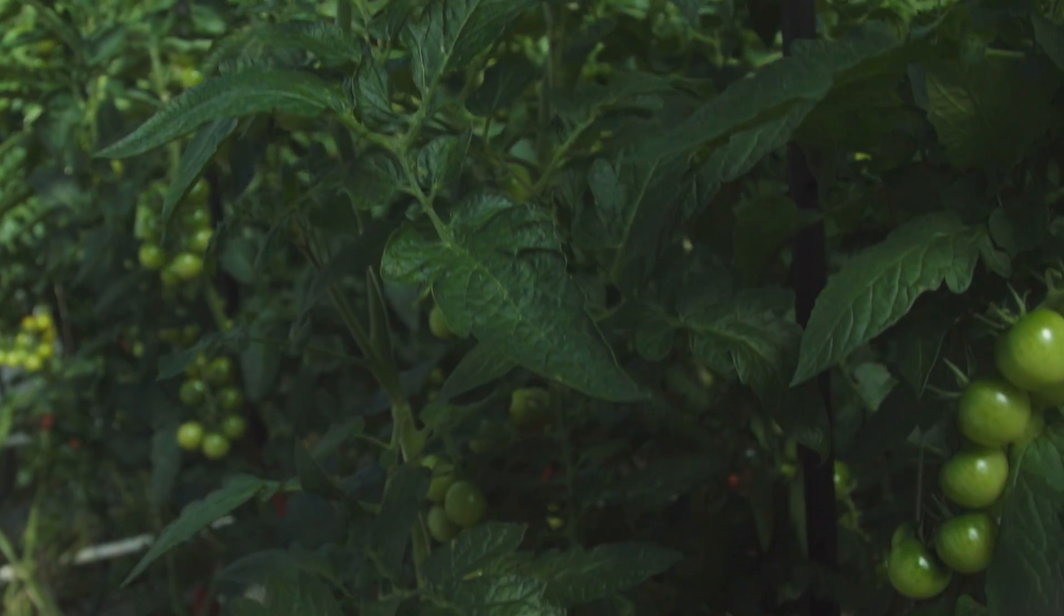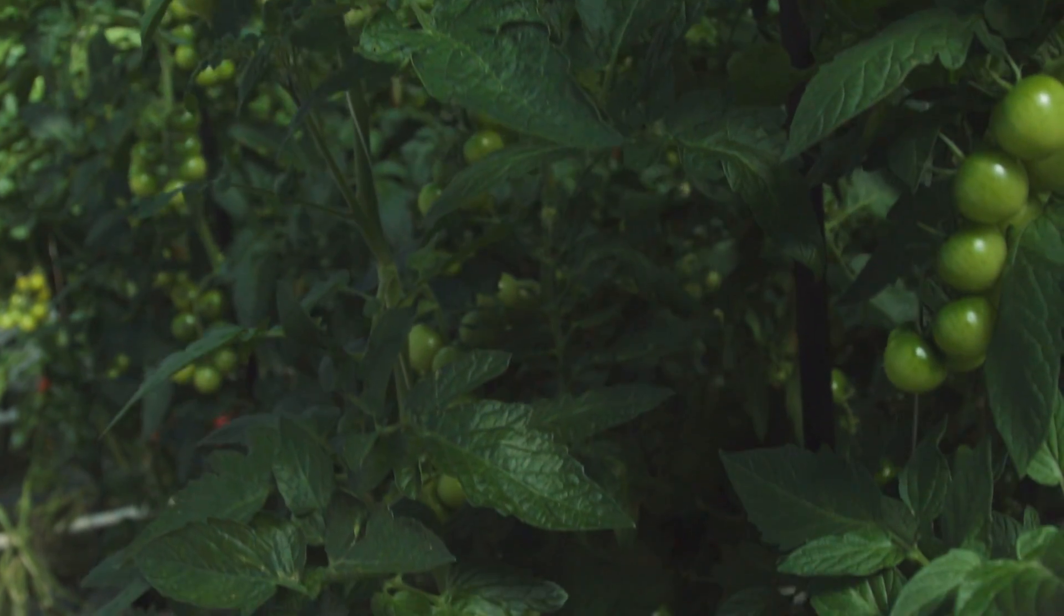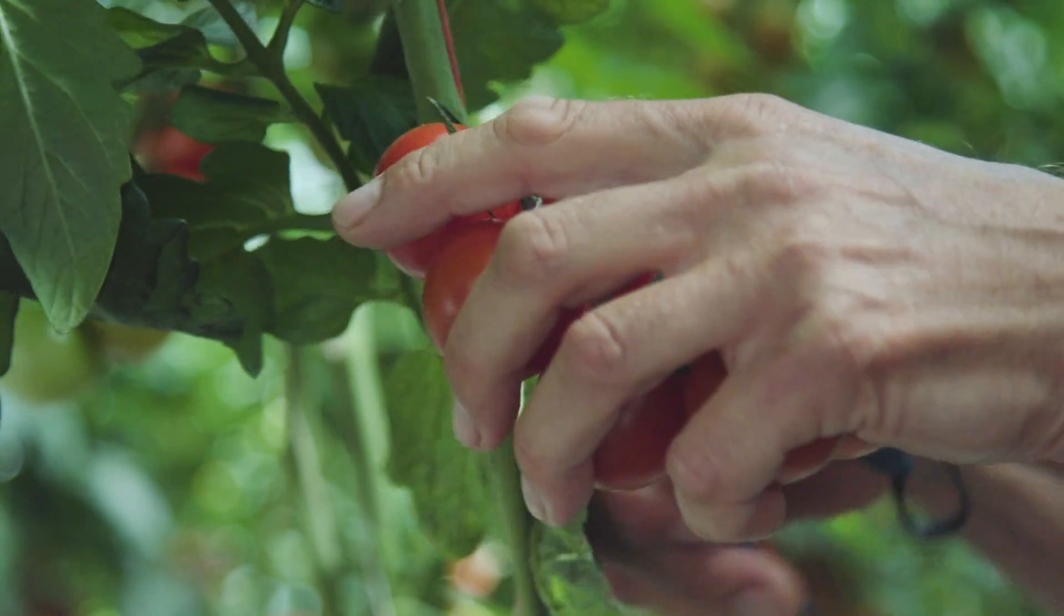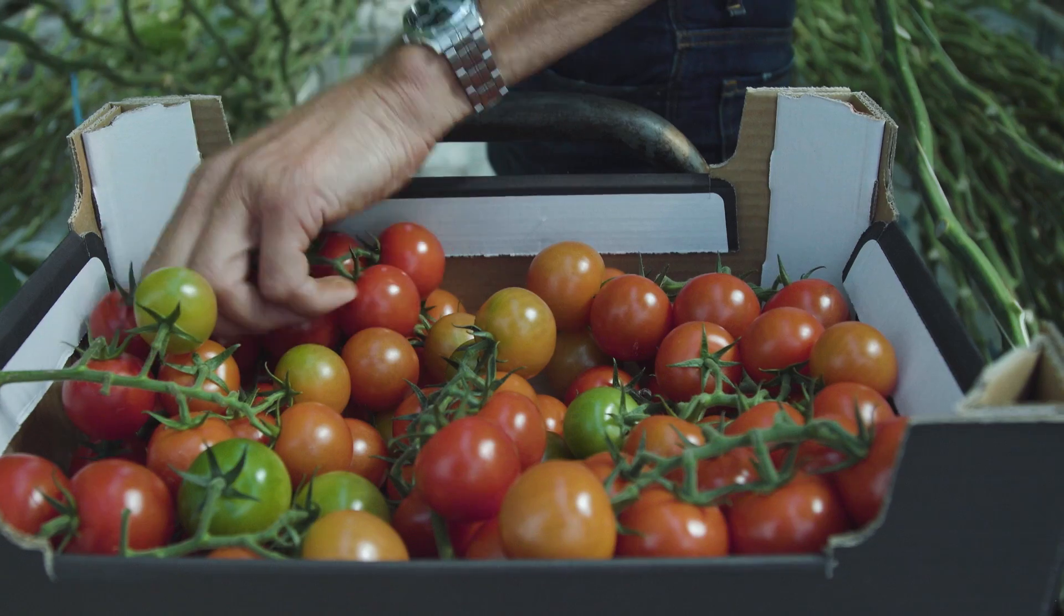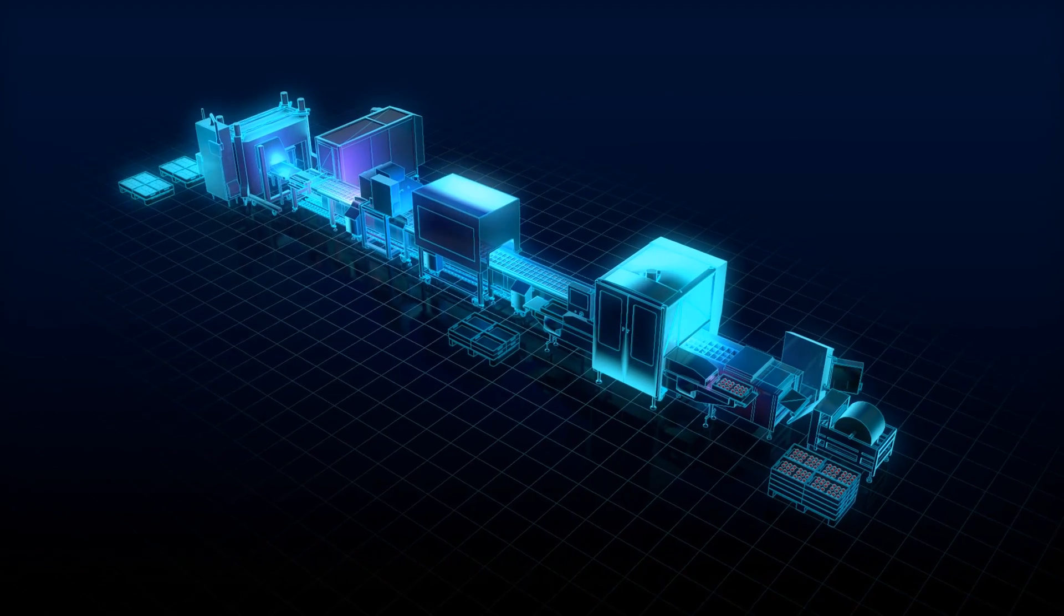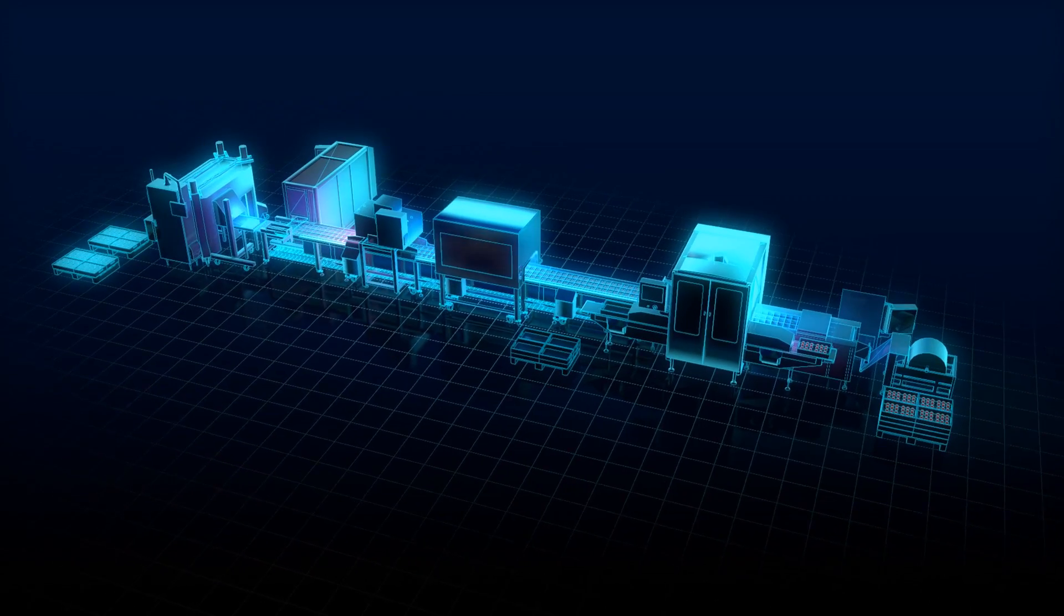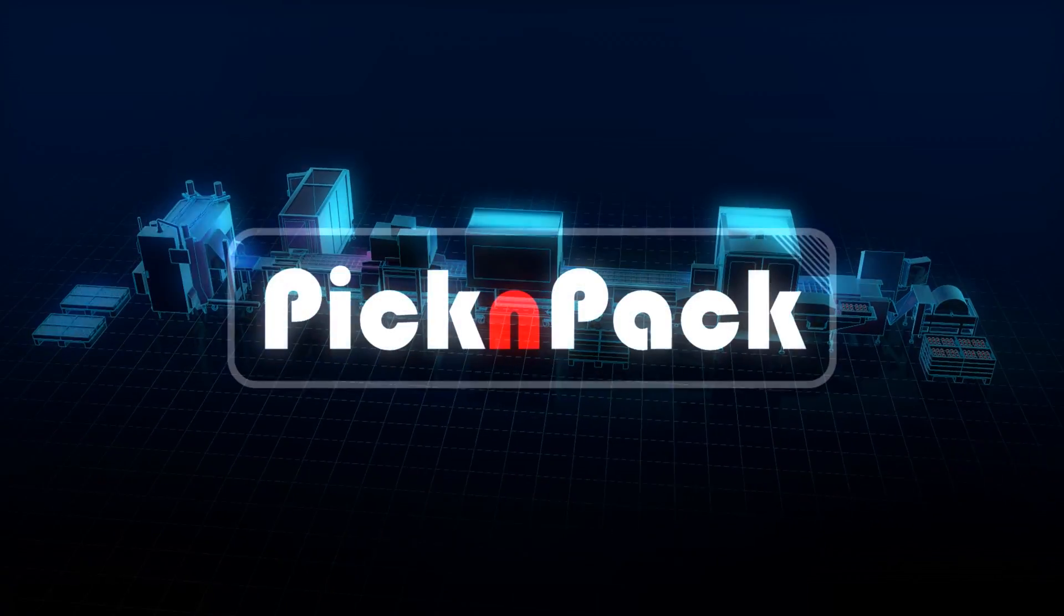At the end of the year 2011, 14 partners came up with a master plan that would revolutionize picking and packing operations in the food industry. A plan that would make it possible for different food products to be processed on the same production line. This master plan was given a name: Pick and Pack.